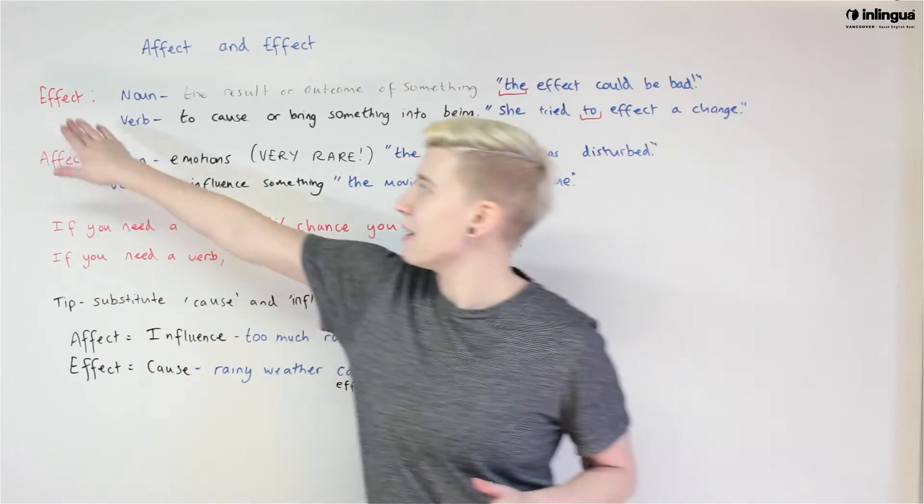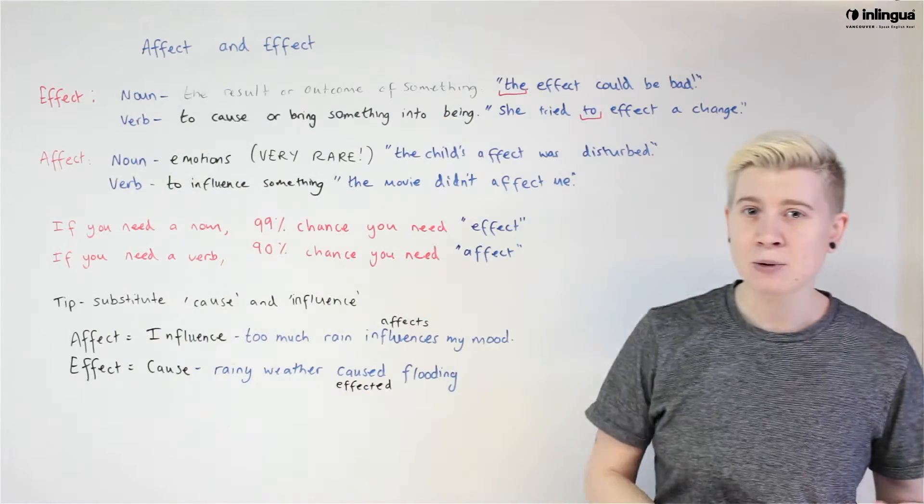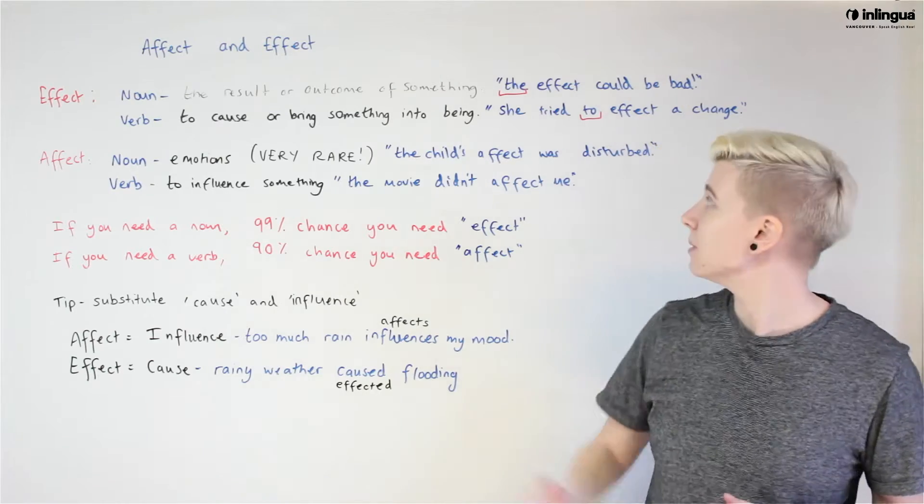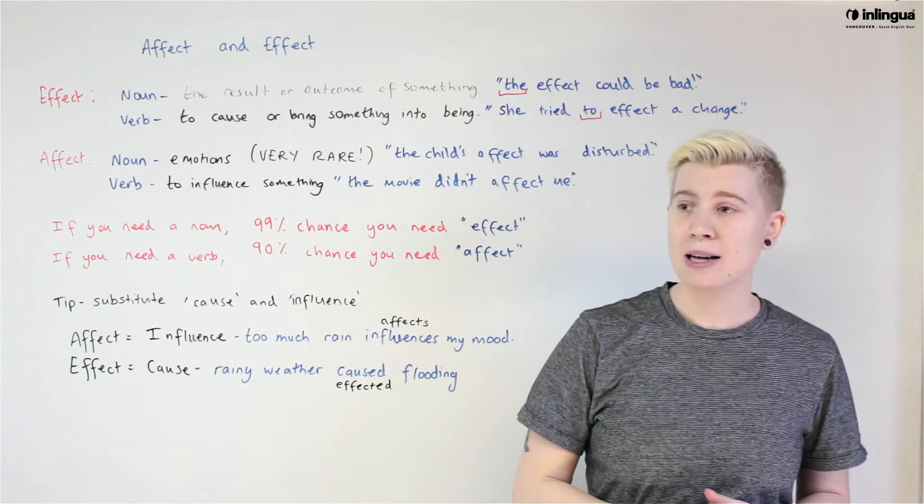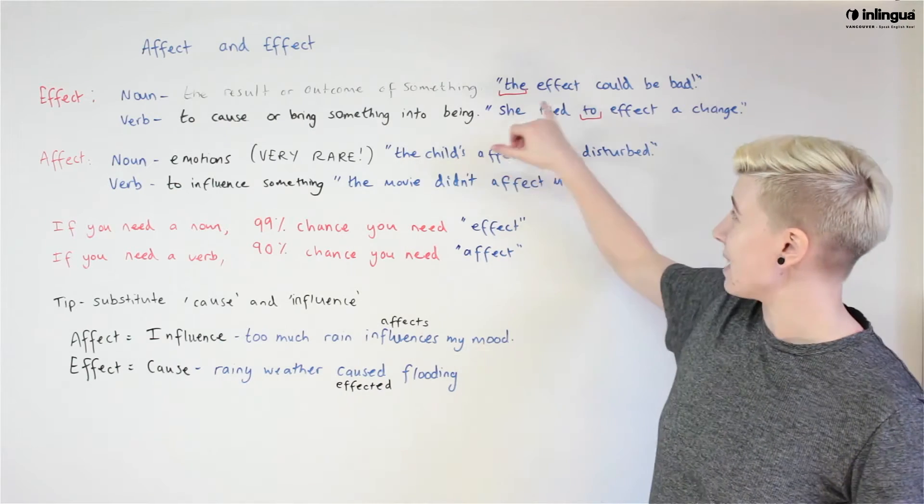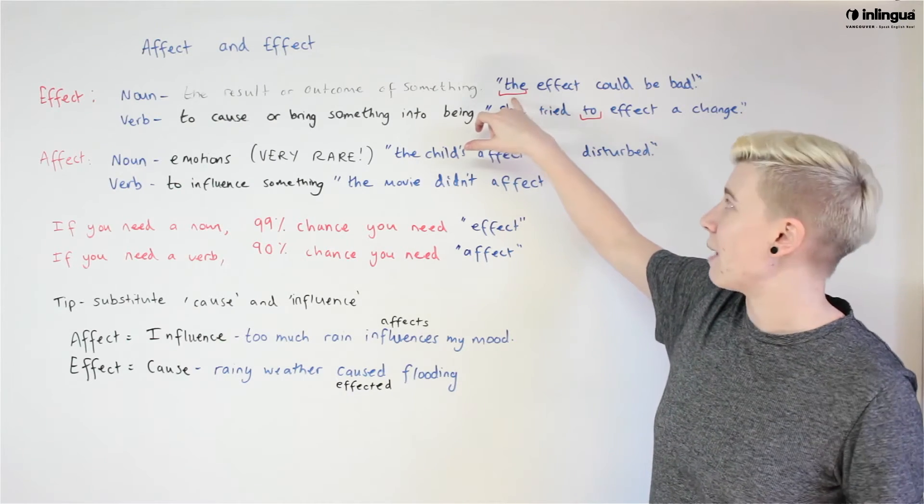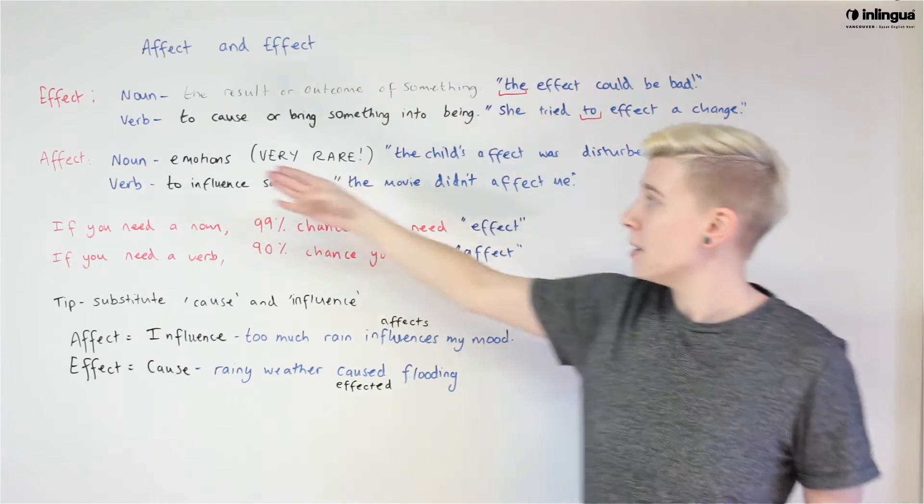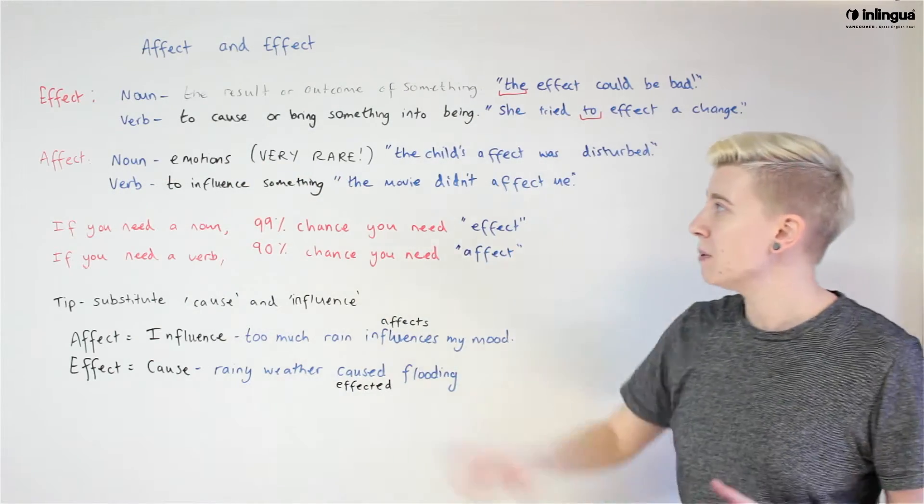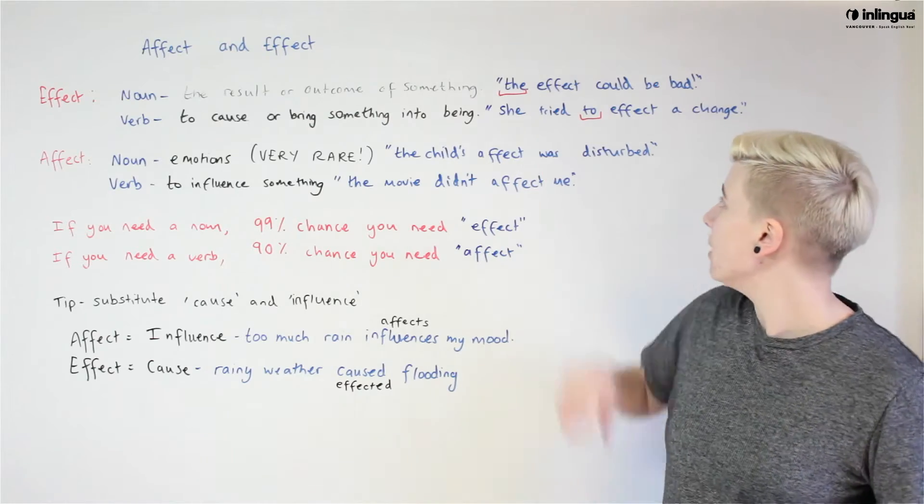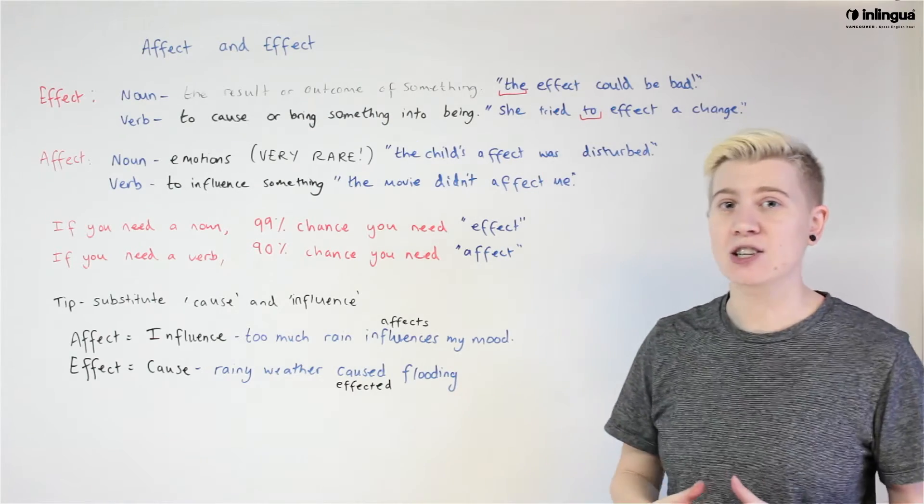We'll start with effect. As a noun, effect means the result or outcome of something. The effect could be bad and we know this has to be a noun because look we've got an article in front of it so it cannot be a verb. When we have effect as a verb, it means to cause or bring something into being. She tried to effect a change.